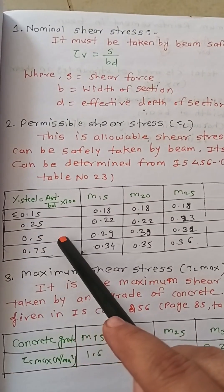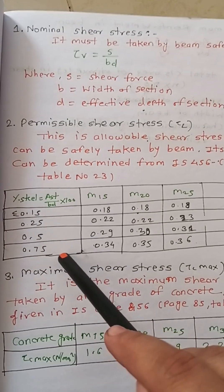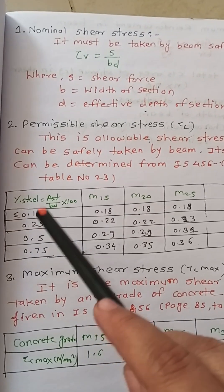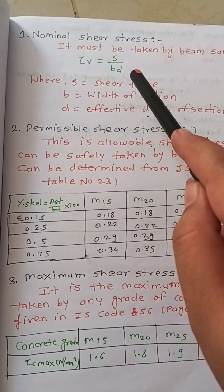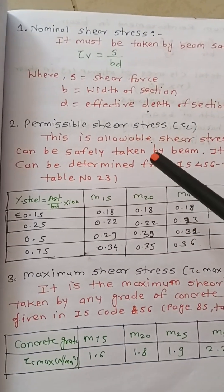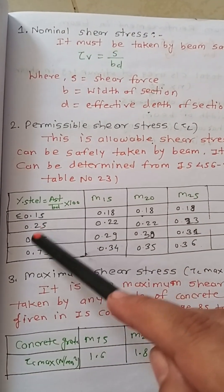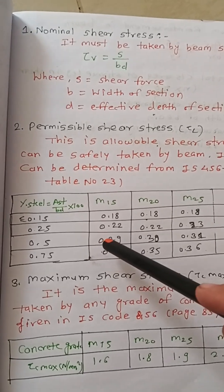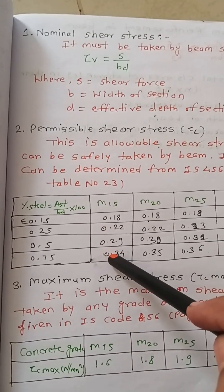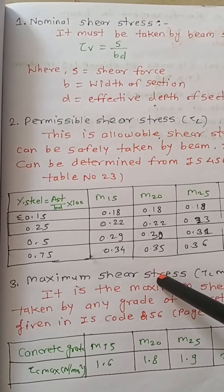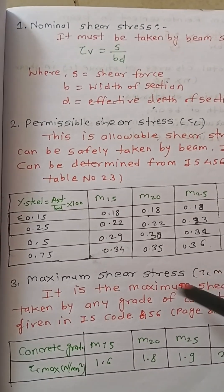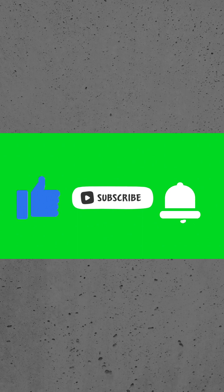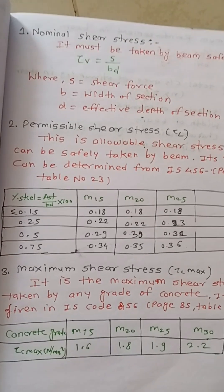If the percentage of steel is greater than 0.15 — say 0.25, 0.5, or 0.75 — you have to use interpolation, because exact values may not be directly available. For example, if your τv is 0.35, you cannot read it directly from the table, so you calculate it using the interpolation method. I will cover interpolation in a coming session.